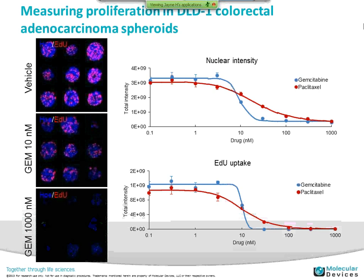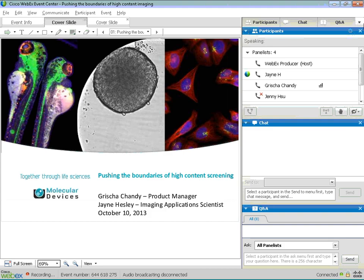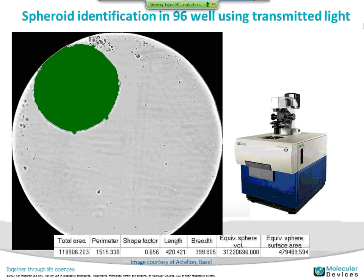This shows a comparison between two different anti-cancer drugs. Another simple assay you can do with the ImageExpress Micro is just to detect the presence of your spheroid and characterize it. A transmitted light image is taken of a single spheroid in the well, and MetExpress can analyze this image using either a custom module or a standard algorithm to detect the spheroid and characterize its size and shape. Volume, surface area, and other parameters can be calculated from that.